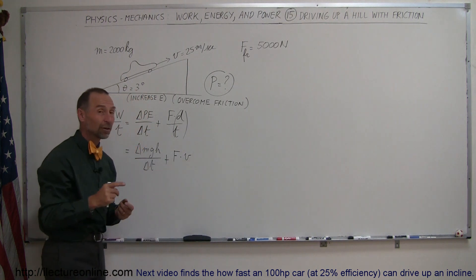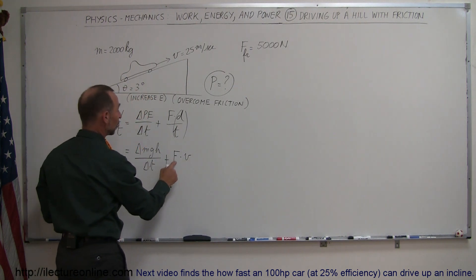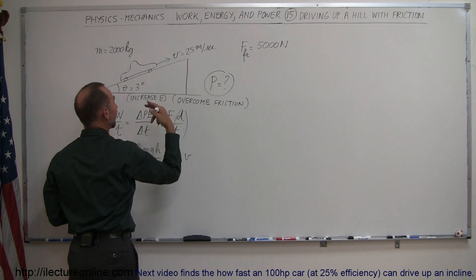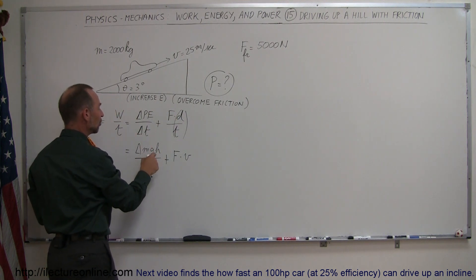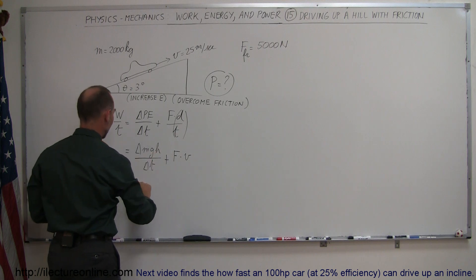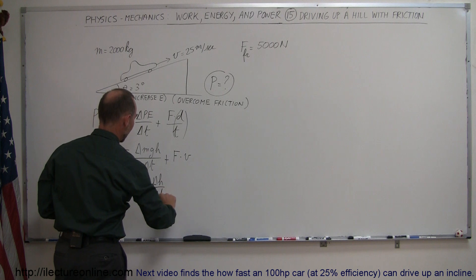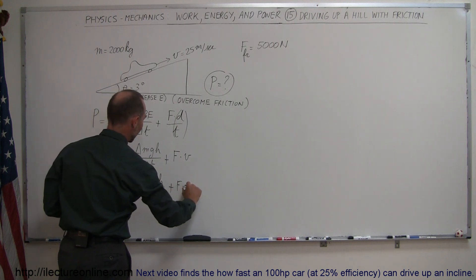So we can figure out how much power we need to overcome friction by simply multiplying the force, 5,000 newtons, times the velocity of the car to get that power required. And then here, since MGH is a constant, we can write this as MGH times the change in height over the time elapsed, plus the force times velocity.